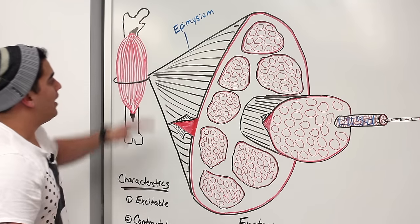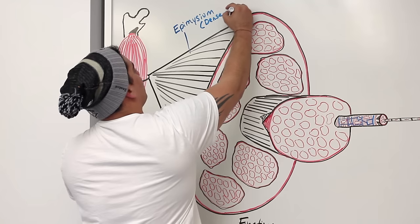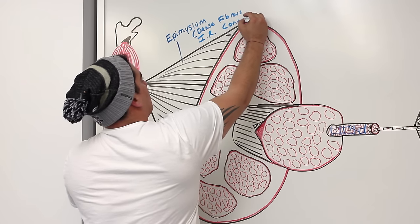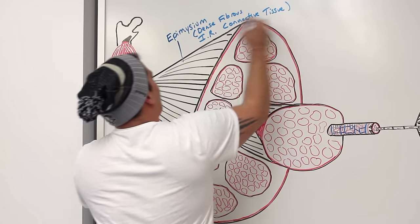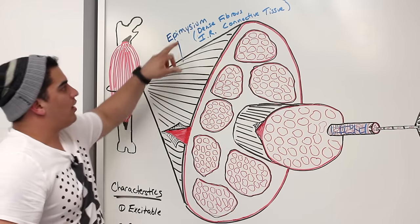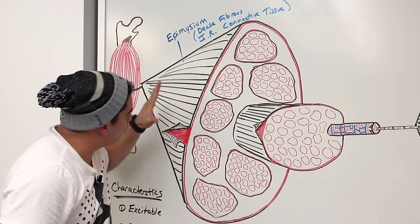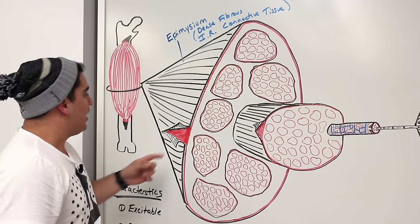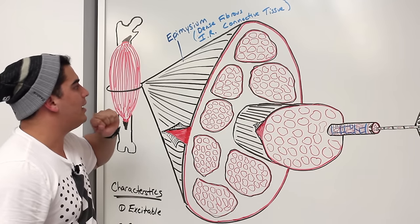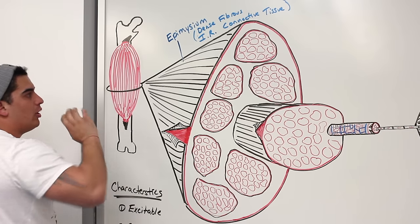The epimysium is a dense fibrous irregular connective tissue — very tough, sometimes called white fibrous tissue. It wraps directly around the large muscle belly. In certain situations, the epimysium can fuse to the periosteum of the bone to form direct fleshy attachments, but we'll discuss that later.